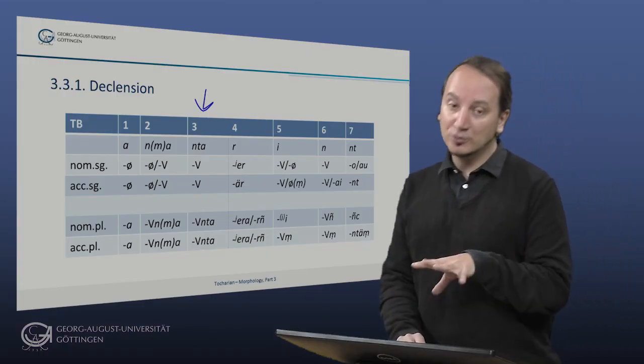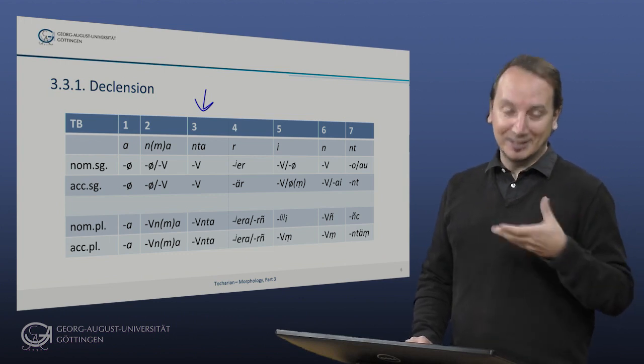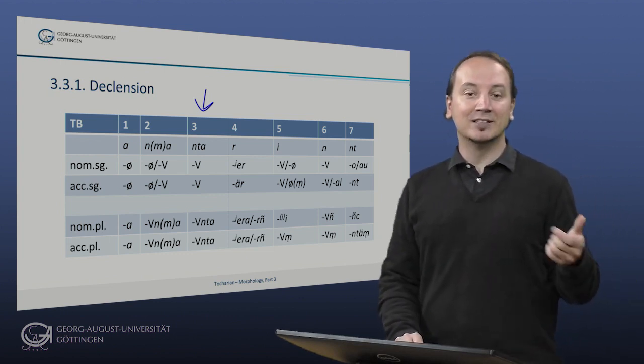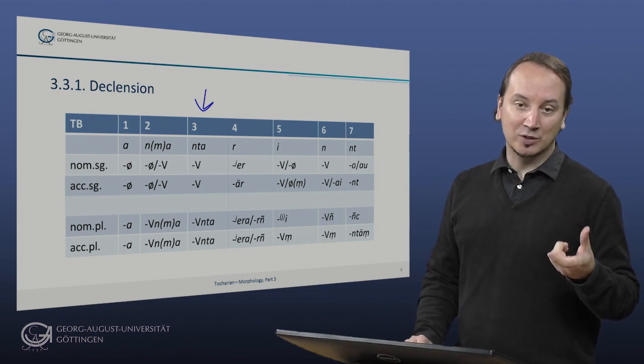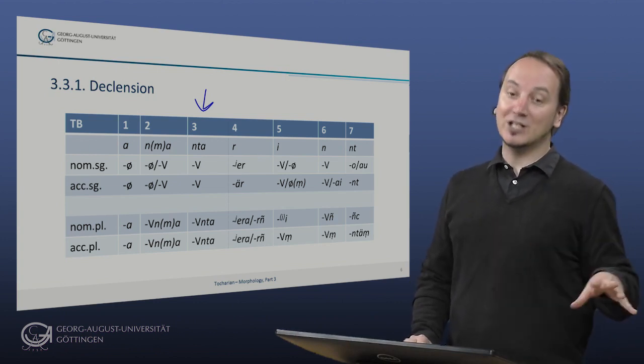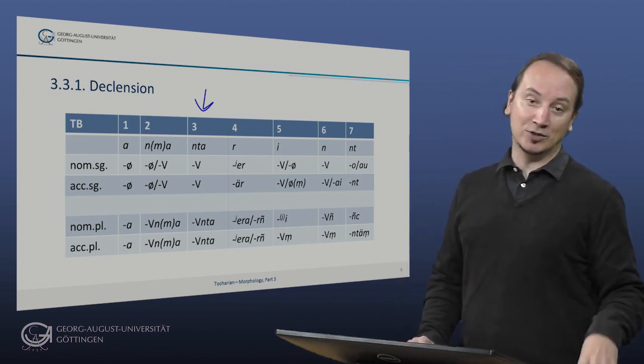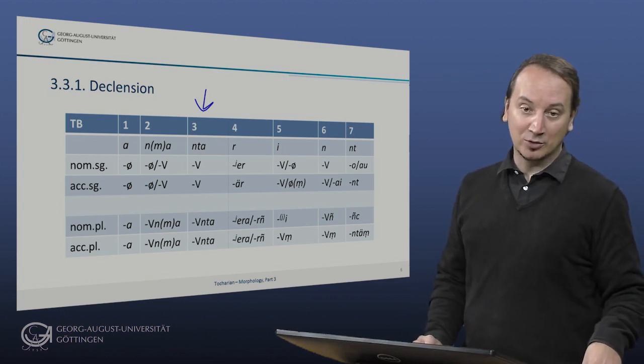Before we turn to the non-neuter classes, note that as a universal feature, at least of Indo-European languages, there is no distinction between nominative and accusative in the neuter. This is true for every Indo-European language that has or in some way continues a neuter, and this is also true for Tocharian.